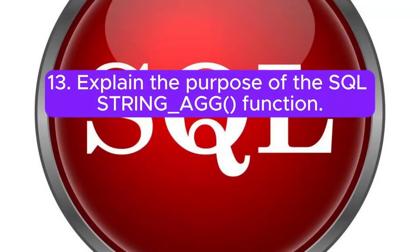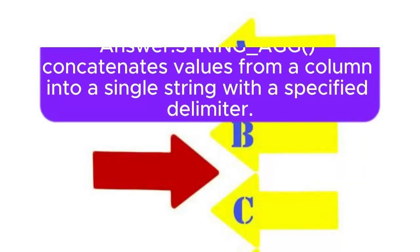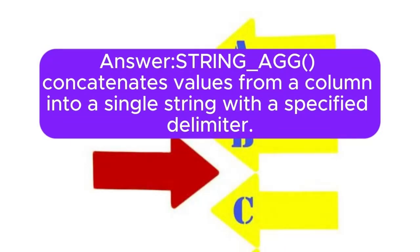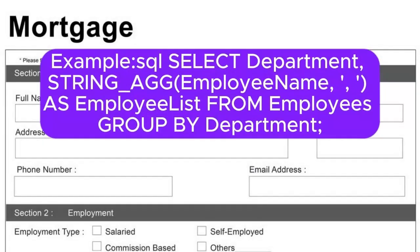Question 13: Explain the purpose of the SQL string_agg function. Answer: String_agg concatenates values from a column into a single string, with a specified delimiter. Example: SELECT department, string_agg(employee_name) as EmployeeList from employees group by department.